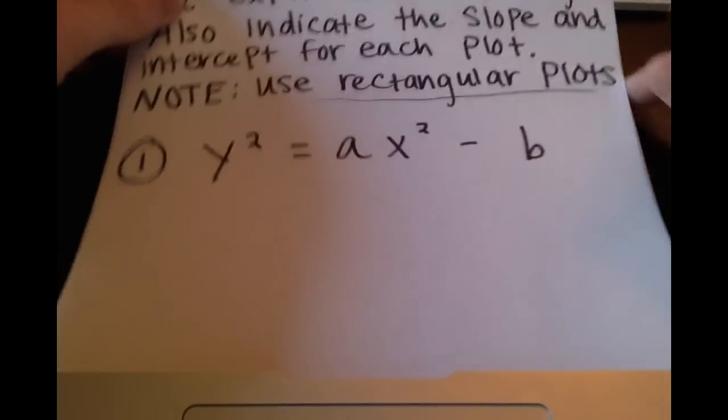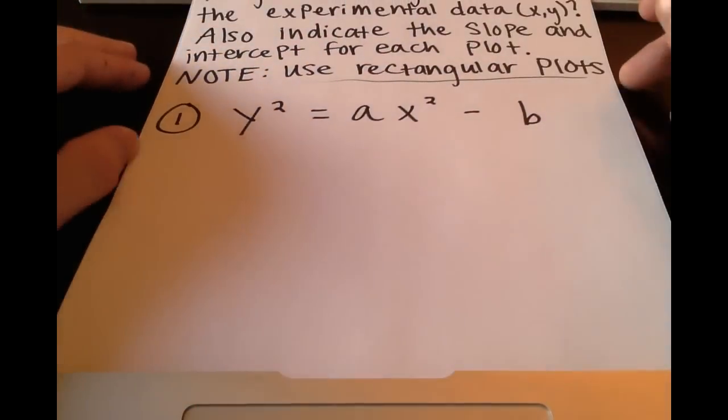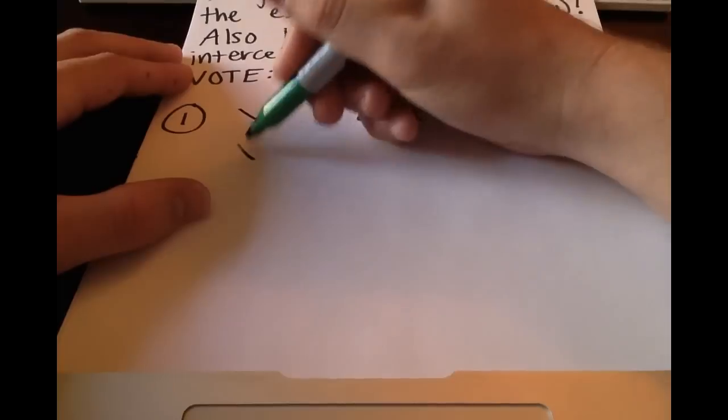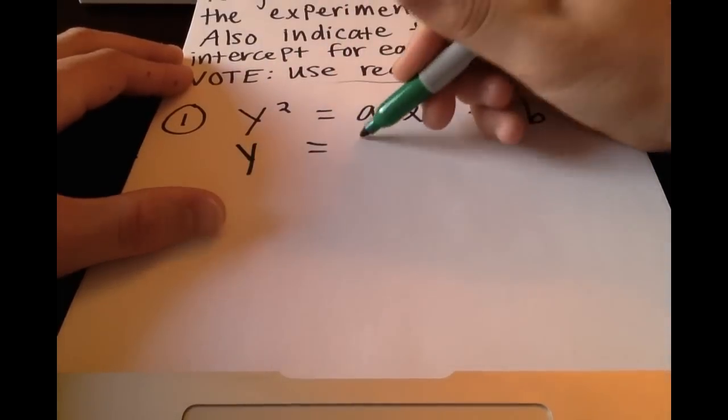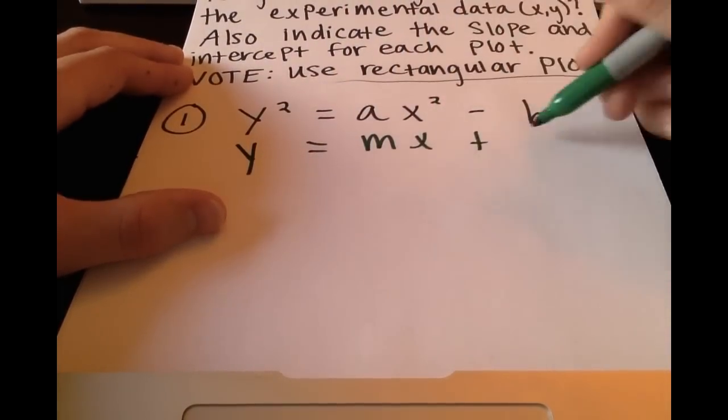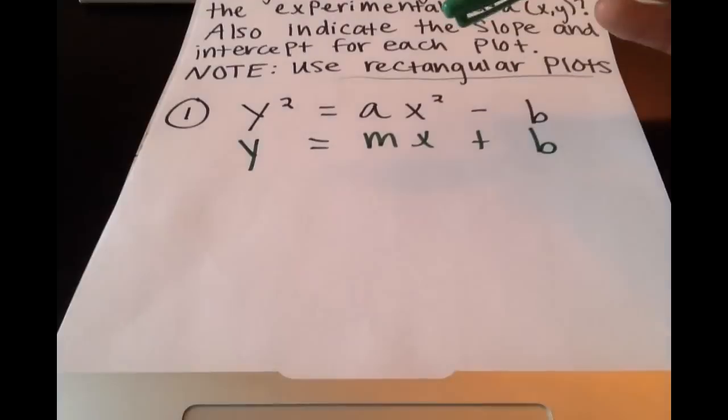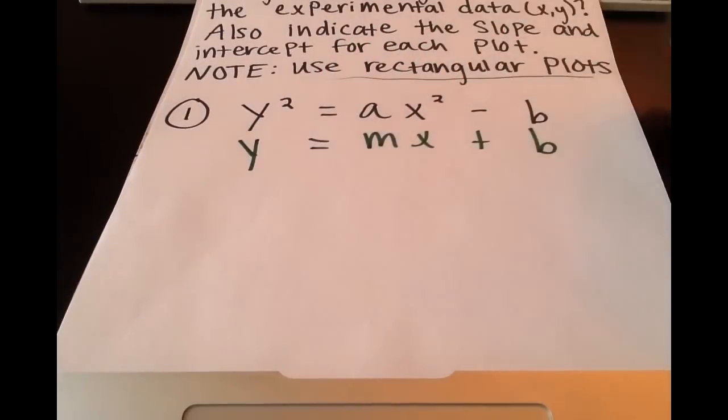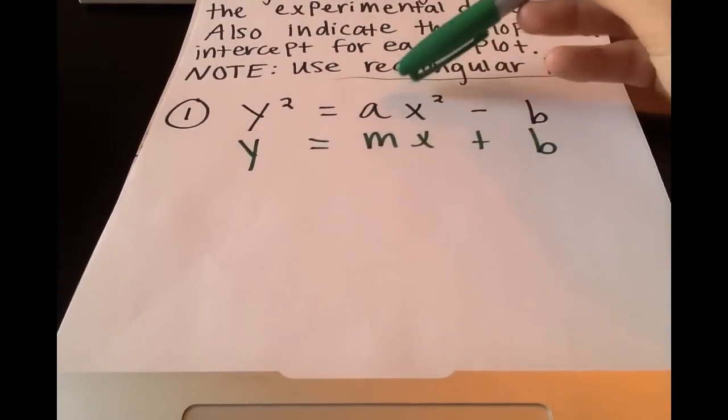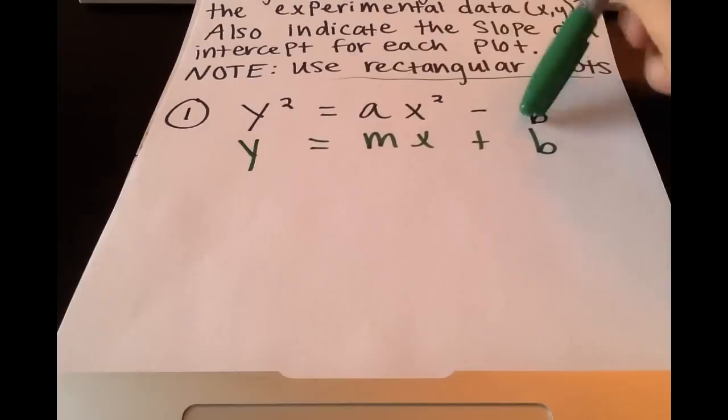For this example, what I like to do right away is write y = mx + b. This way we can correlate each of the values and have an idea of what to plot, what our slope would be, and what our intercept would be.